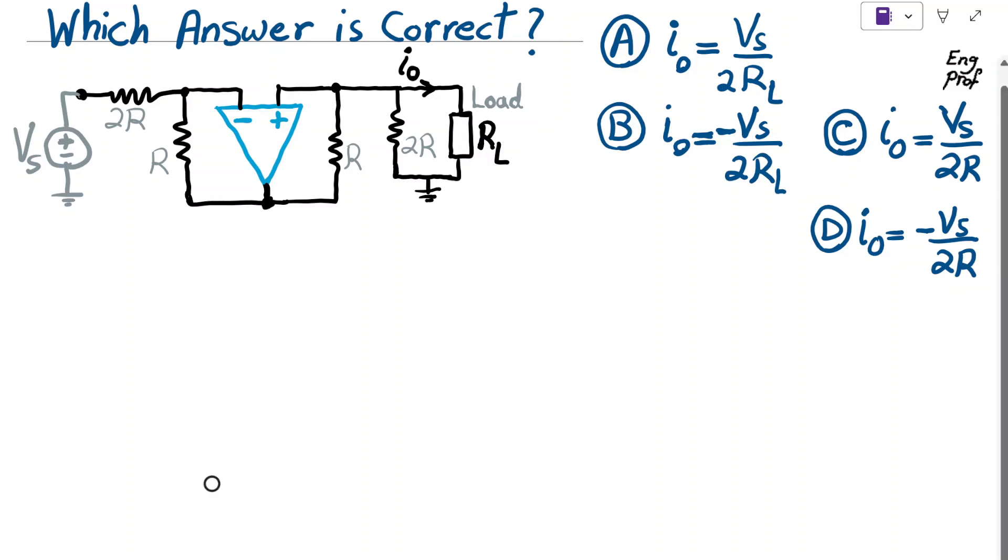For the circuit shown here designed using one ideal op-amp, we have Vs as input voltage source, and we have 2R, R, again R, and 2R, and some load resistance or impedance, and then we have this output current. Which one of these four multiple choices is the correct one in terms of relating the output current to Vs?